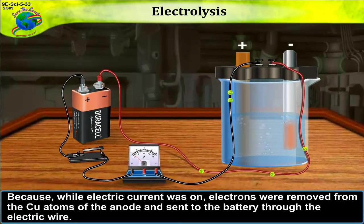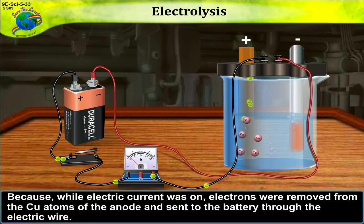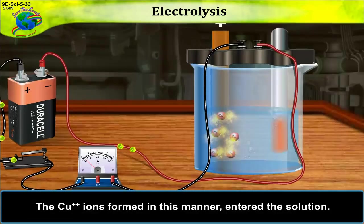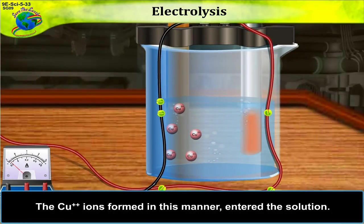Because while electric current was on, electrons were removed from the Cu atoms of the anode and sent to the battery through the electric wire. The Cu2 plus ions formed in this manner entered the solution.